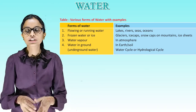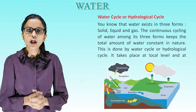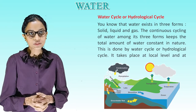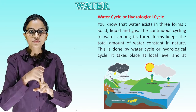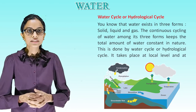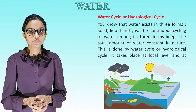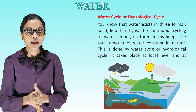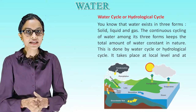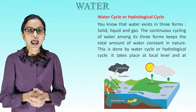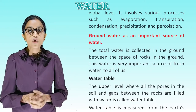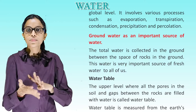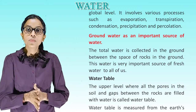Water cycle or hydrological cycle. You know that water exists in three forms: solid, liquid and gas. The continuous cycling of water among its three forms keeps the total amount of water constant in nature. This is done by the water cycle or hydrological cycle. It takes place at the local level and at the global level. It involves various processes such as evaporation, transpiration, condensation, precipitation and percolation.